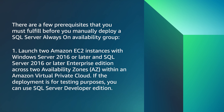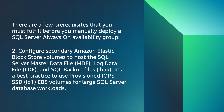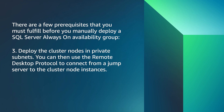Launch two Amazon EC2 instances with Windows Server 2016 or later and SQL Server 2016 or later Enterprise Edition across two availability zones within an Amazon VPC. For testing purposes, you can use SQL Server Developer Edition. Configure secondary Amazon EBS volumes to host the SQL Server master data files, log data files, and SQL backup files. It is a best practice to use provisioned IOPS SSD EBS volumes for large SQL Server database workloads.